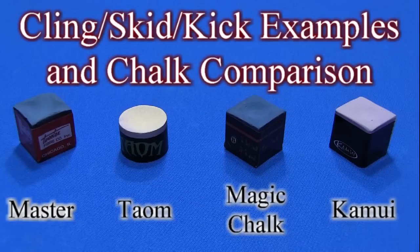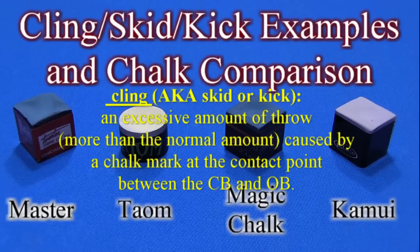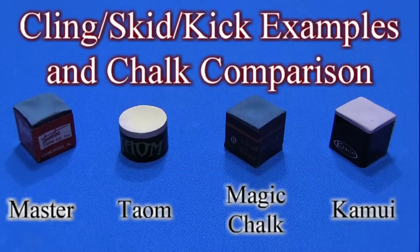In this video, I show examples of cling, also known as skid or kick, which is an excessive amount of throw — more than the normal amount — caused by a chalk mark at the contact point between the cue ball and object ball. I also demonstrate a simple cling test and use it to characterize how likely various chalks are to cause cling. The chalks tested are Master, Tae-ohm (or Tome), Magic Chalk, and Kamui.